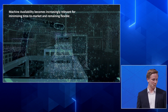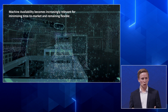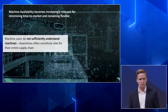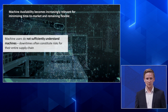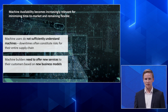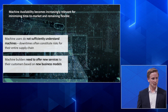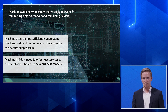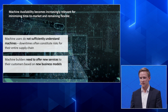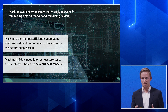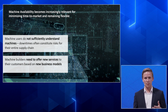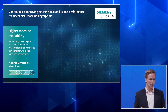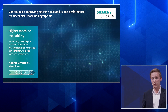For the second value driver — machine availability — you are supposed to deliver on time in good quality. It is increasingly important for customers, and a challenge for machine builders to offer new services. They can leverage their core capability: they know their machines very well. We give them a tool to understand their machines even better to offer new services and business models. We have Analyze My Machine Condition, which offers higher machine availability by creating a mechanical fingerprint of the machine tool.